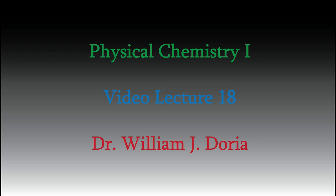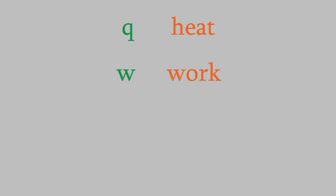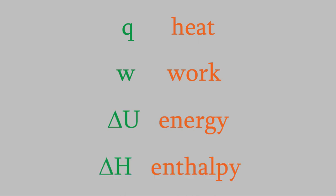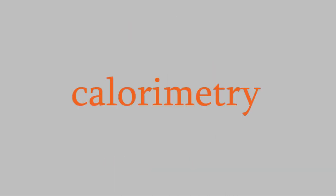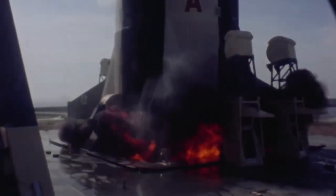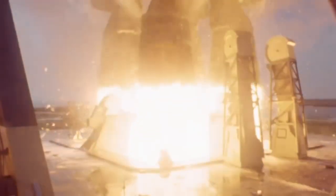Welcome back to this series of videos for Physical Chemistry 1. In the last two videos we talked about four thermodynamic properties of chemical processes: the change in heat, work, energy, and enthalpy. One of the easiest of these to measure is enthalpy. In video 16 we saw that we can use calorimetry to measure the enthalpy of a reaction. Sometimes a reaction is too difficult or dangerous to reproduce in a lab, so we need a different way to determine enthalpy changes. It turns out that enthalpies of thousands of reactions have already been measured, and we can use that information to find enthalpies of other reactions.